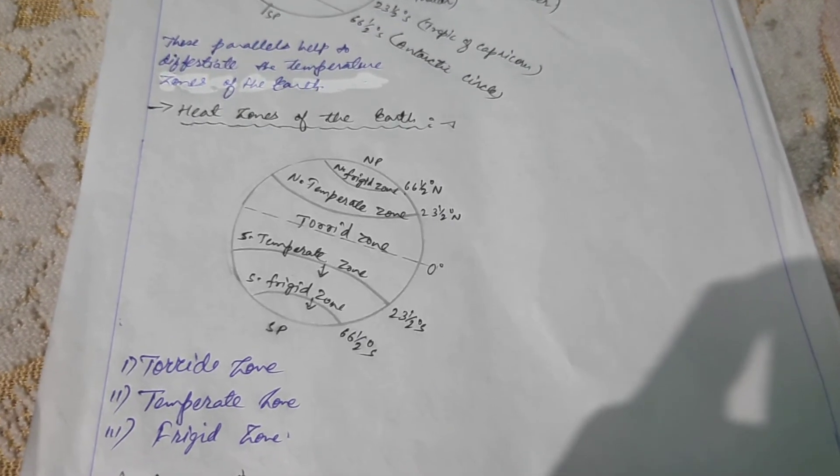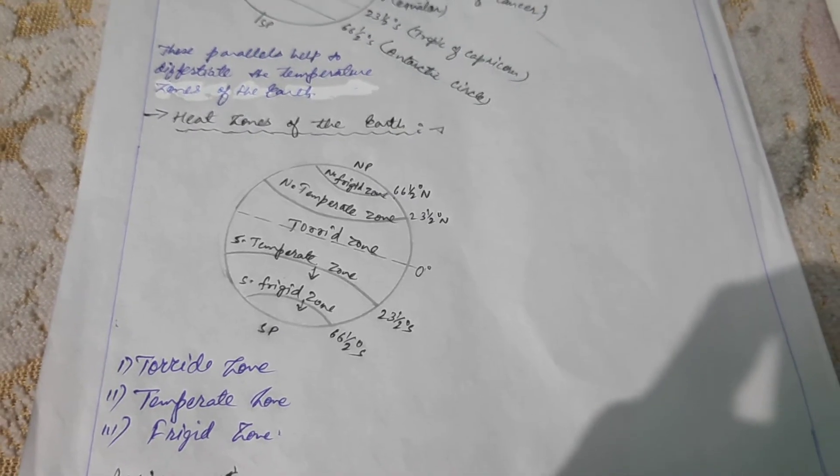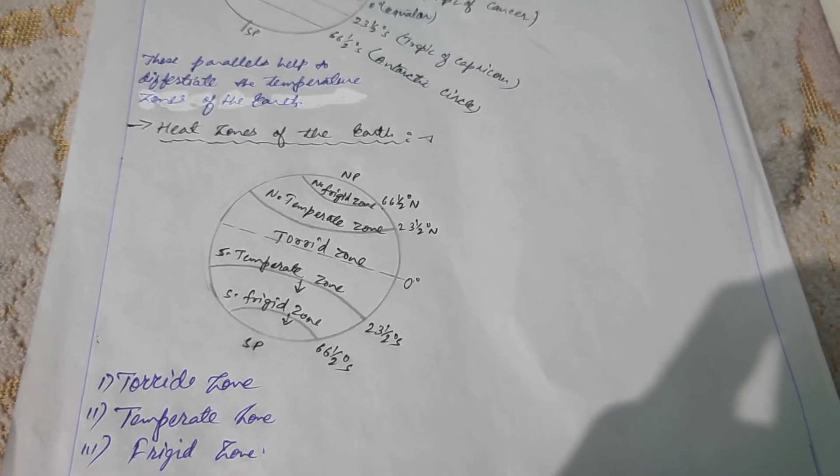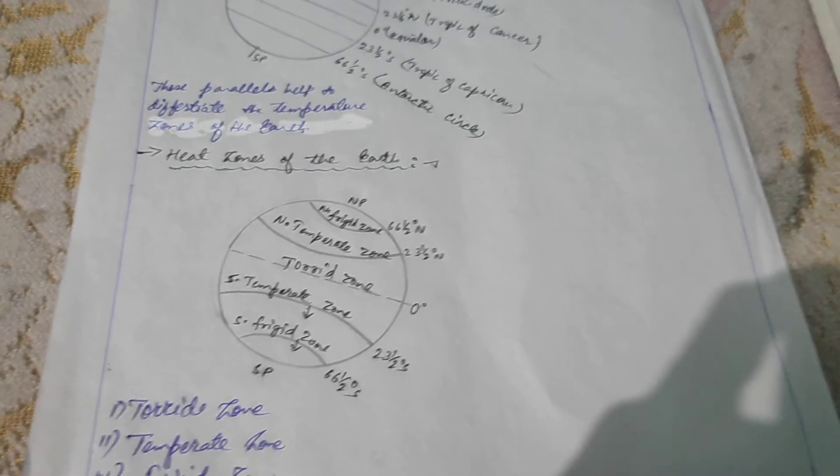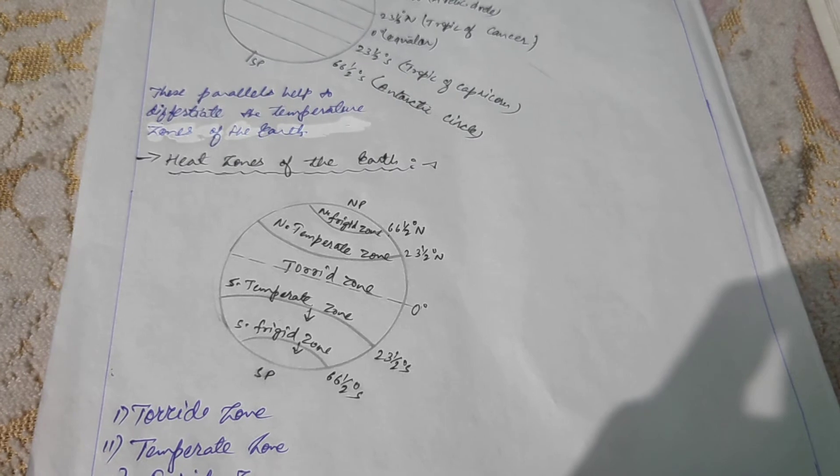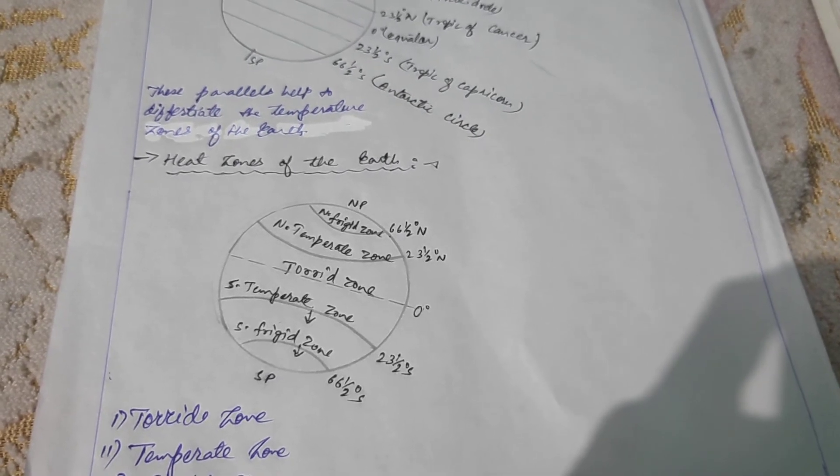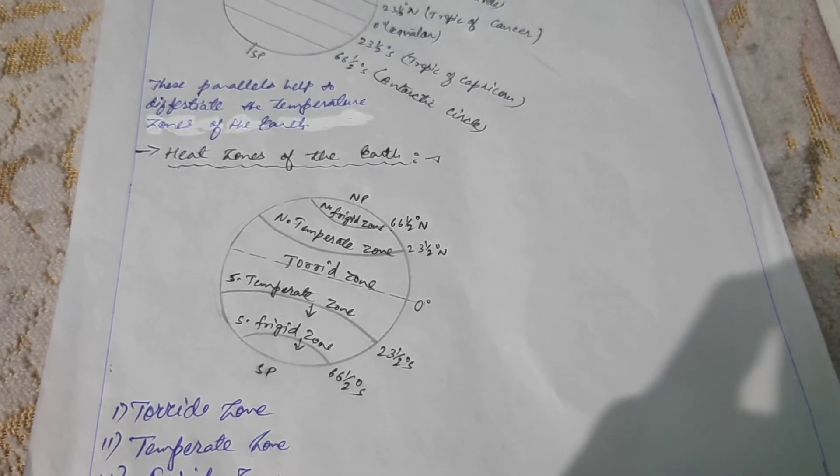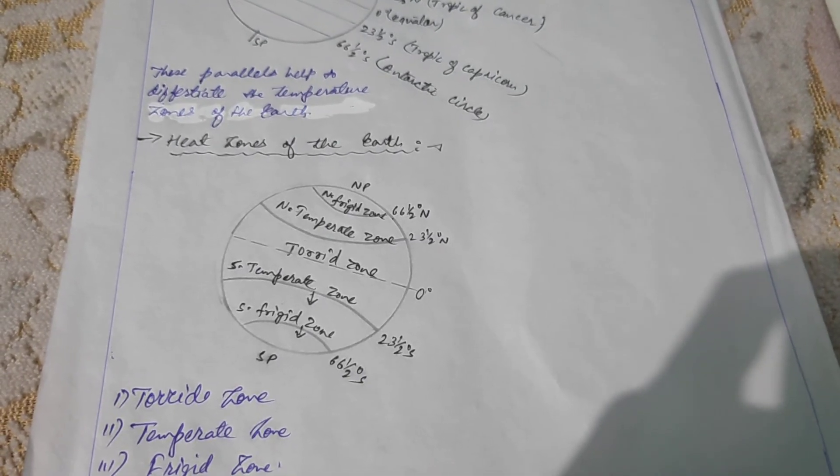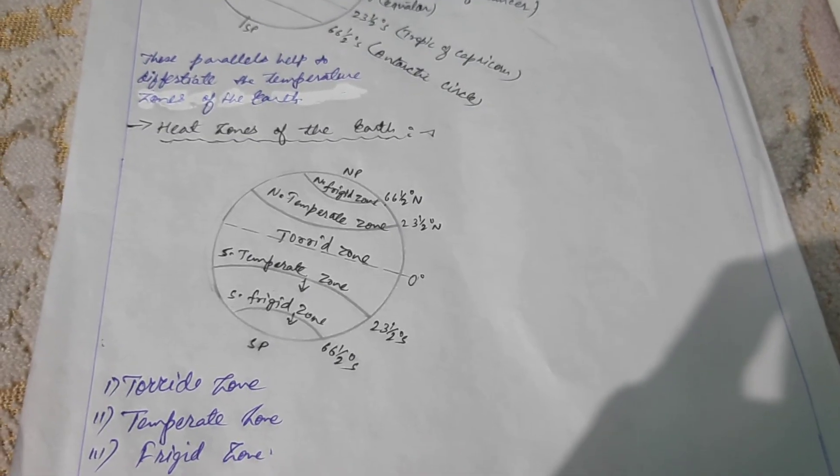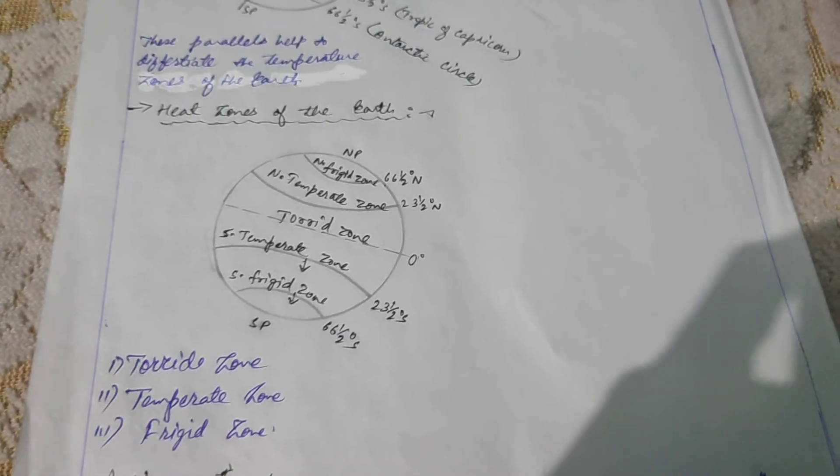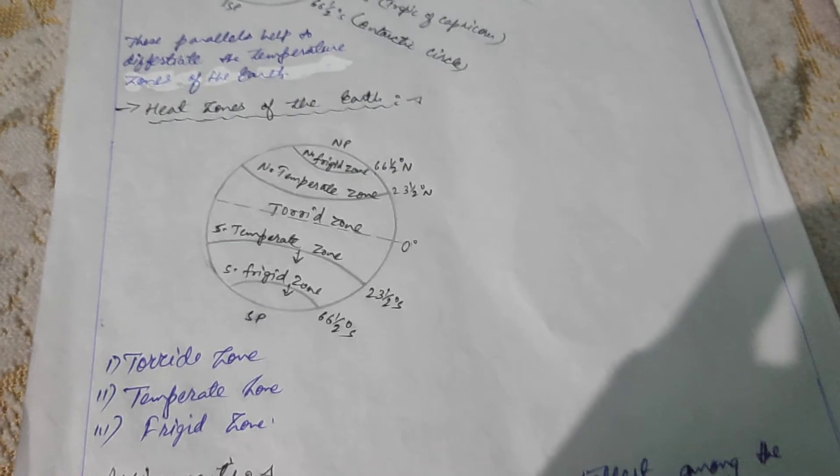The last one is frigid zone. The angle of the earth's sun rays keeps decreasing as we move toward the poles. The latitude between the Arctic circle and the north pole in the northern hemisphere and between the Antarctic circle and the south pole in the southern hemisphere get the least solar energy. These regions are very cold and are therefore known as frigid zone or we can also say it as polar regions.